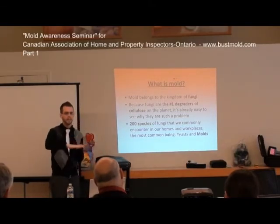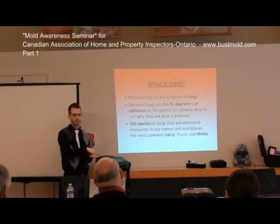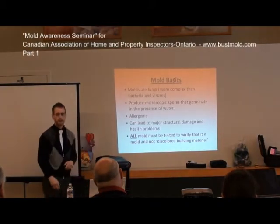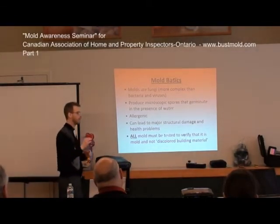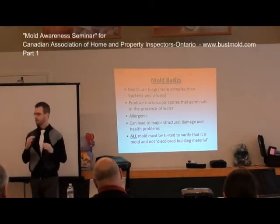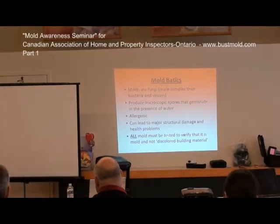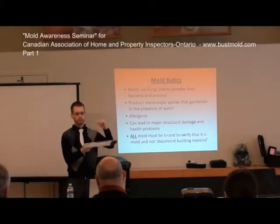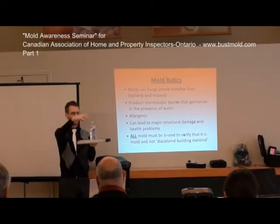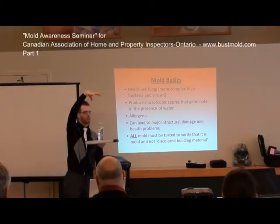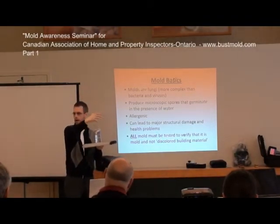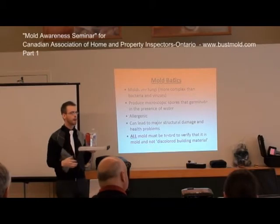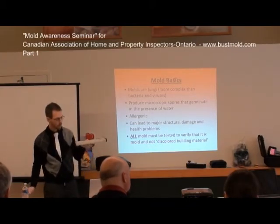Sometimes getting rid of the mold on the surface is not just enough because it's embedded directly into the materials, which is why removal of the materials is essential in order to remove mold. Mold is very complex and I'm going to take a little bit of time to explain it simply. We're going to use an example of a tree. This would be the soil, and the tree would be this bottle of water. This would be the trunk of the tree, and the rest would be the leaves, foliage and fruits growing off the tree. Now what's beneath the surface of the soil? Roots. This is where mold is complex.